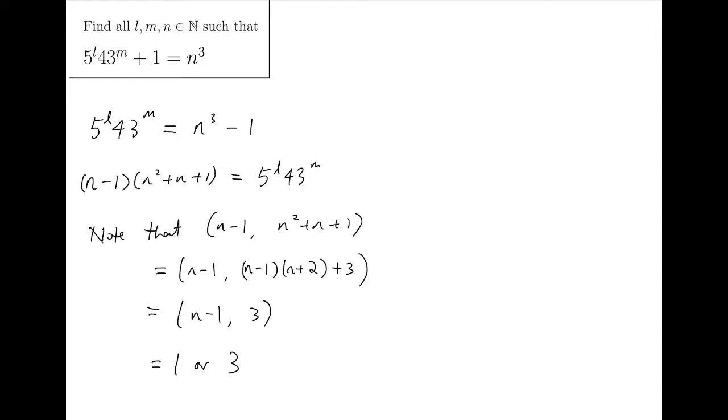So, we know that N minus 1 and N squared plus N plus 1 cannot both have factors of 5 or both have factors of 43. So, the prime factors will split very clearly between those two expressions. So, we only have four cases.